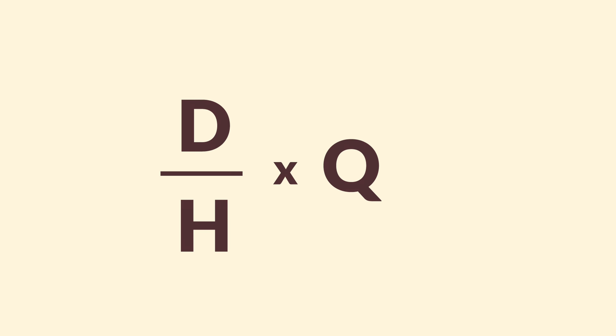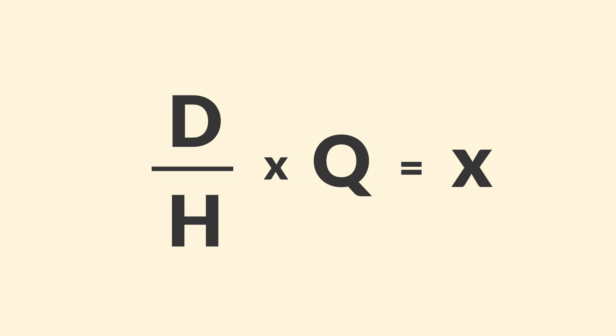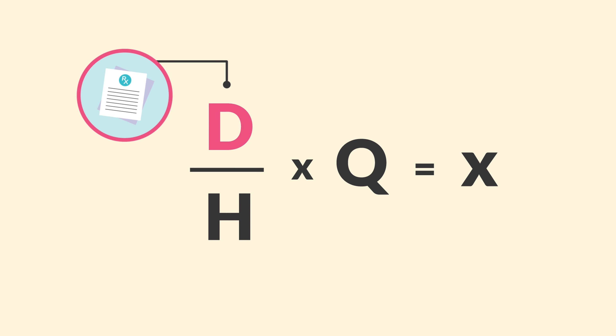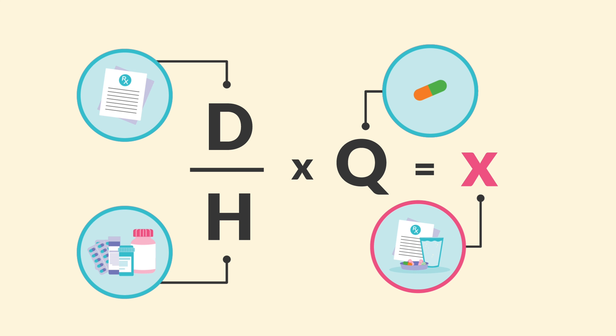So this formula looks like this: D over H times Q equals our desired amount. D is the desired or prescribed dose of the medication. H is the medication you have on hand. Q is the quantity associated with what you have. And X is the amount of medication you are going to administer as the nurse to the client.